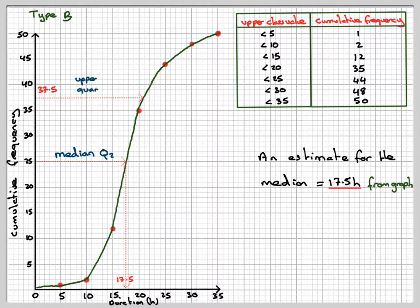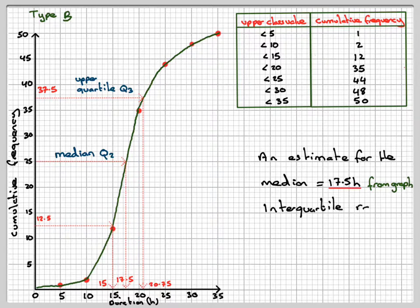The upper quartile Q3, 37.5, reading down the graph. So it's important that you draw on the graph these lines. So you get 20.75. And for this one, 12.5, you get 15. And then the interquartile range will be Q3 minus Q1, which is going to be 20.75 minus 15, which is 5.75.